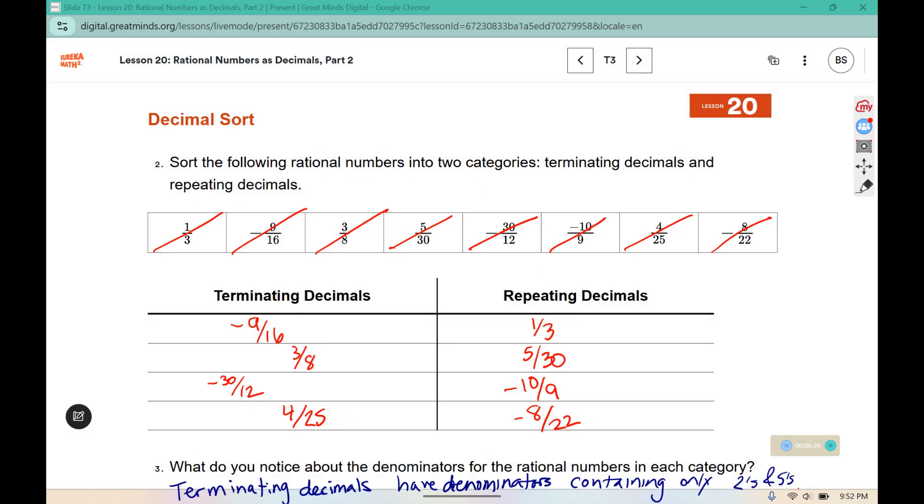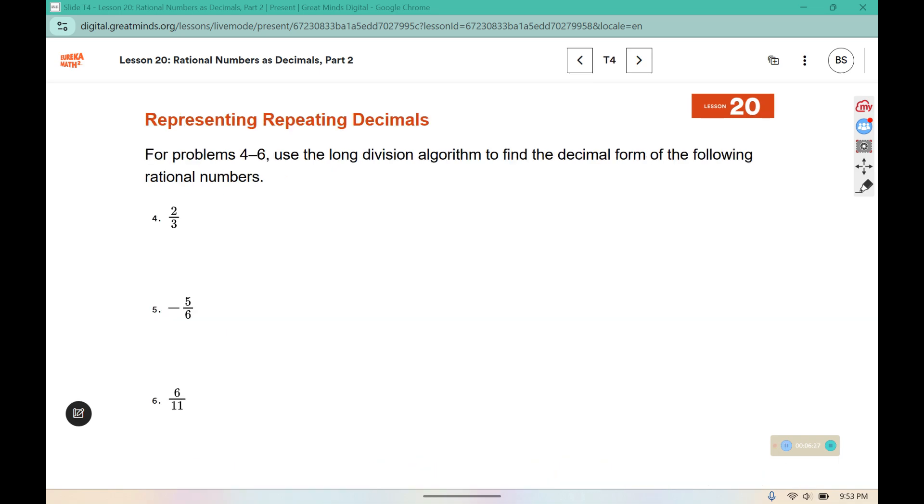What do you notice about the denominators of the rational numbers in each category? The terminating decimals all have denominators that contain only factors of twos and fives. For problems 4 through 6, use the long division algorithm to find the decimal form of the following rational numbers. Remember, as soon as you see a repeating remainder, that's an indication that you don't have to continue. The decimals you have there are just going to continue to repeat. I'm going to do number 4 on video, and then I'm going to pause it or have you pause it so you can try 5 and 6 on your own.